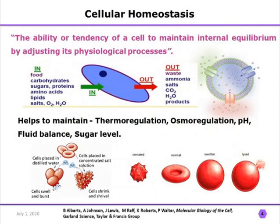Now I will discuss cellular homeostasis. Cellular homeostasis is the ability or tendency of a cell to maintain internal equilibrium by adjusting its physiological processes. It determines what kind of substances enter the cell and what goes out. This process helps maintain thermoregulation, osmoregulation, pH, fluid balance, and sugar levels.